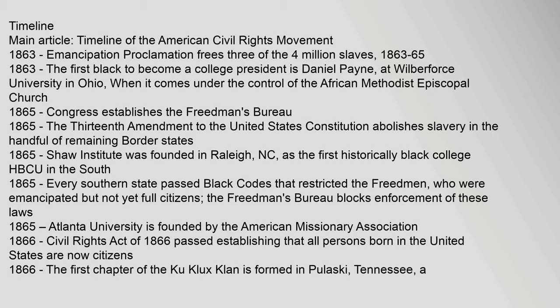Key timeline events: In 1863, the Emancipation Proclamation freed three of the four million slaves. In 1863–65, Daniel Payne became the first black college president, at Wilberforce University in Ohio, when it came under the control of the African Methodist Episcopal Church. In 1865, Congress established the Freedmen's Bureau; the Thirteenth Amendment abolished slavery in the remaining border states; Shaw Institute was founded in Raleigh, North Carolina as the first historically black college (HBCU) in the South; every southern state passed black codes restricting the freedmen; and Atlanta University was founded by the American Missionary Association.